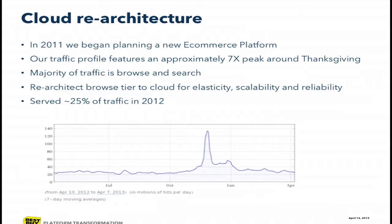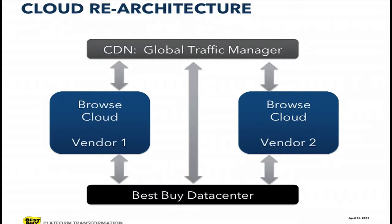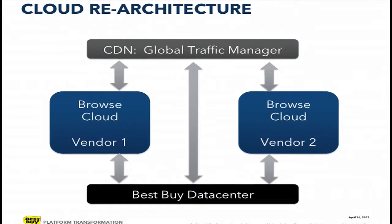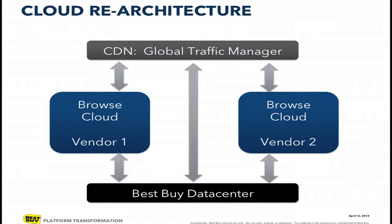Today is the first time we're really talking about it: we actually served about 25% of our traffic last year — bestbuy.com, during holiday. From about July onwards, we served about 25% of our traffic off of our cloud architecture. At a high level, what we're doing at Best Buy on the browse layer is putting a global traffic manager in front of multiple clouds. We're going for multiple cloud vendors, really not trying to get locked into any particular vendor, because vendors occasionally fail and we don't want to be tied to just one. All the commerce traffic and all the secure traffic is still served by our data center.